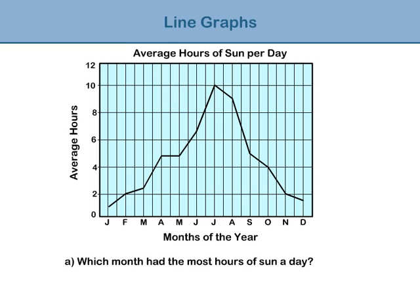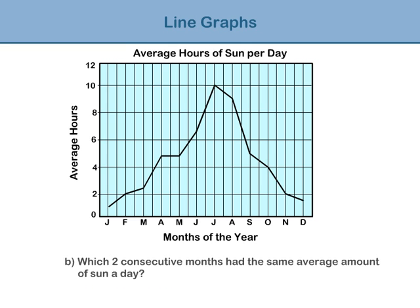Question a: Which month had the highest average hours of sun a day? Question b: Which two months had the same average hours of sun a day? The graph is flat between April and May, which shows that April and May had the same average amount of sun a day.